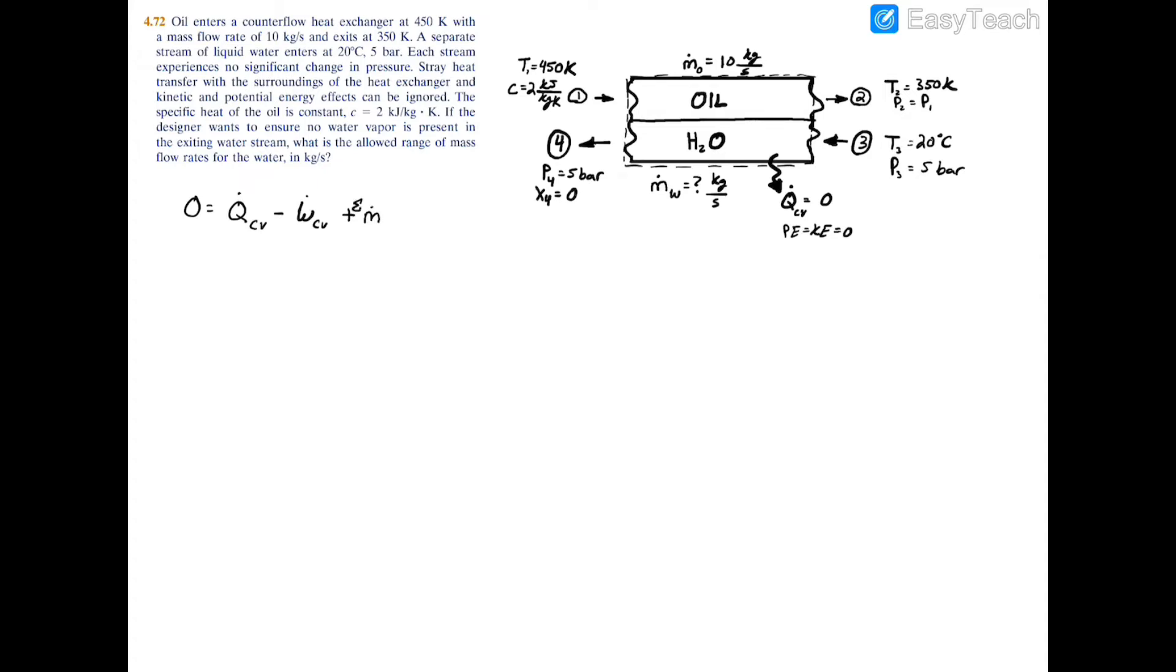So it's the summation of m dot i times hi minus the summation of m dot e times he. Essentially all of the incoming mass flow rates times the incoming enthalpies minus the exiting mass flow rates times the exiting enthalpies.